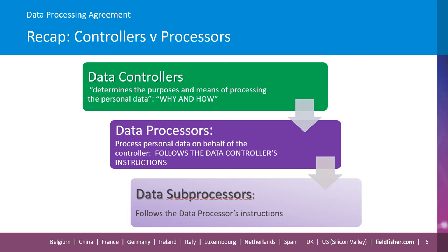So to recap from the previous session on controllers and processors. A controller determines the purposes and means of processing the personal data — the why and the how. A processor processes personal data on behalf of the controller, so they have to follow the controller's instructions. A sub-processor is appointed by a processor and they must follow the processor's instructions. Note that a processor can become a controller if they exceed the controller's instructions or they process the personal data for their own purpose.